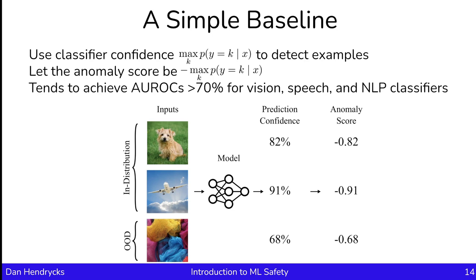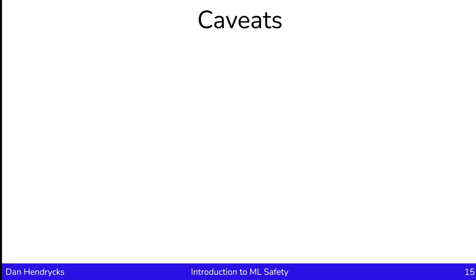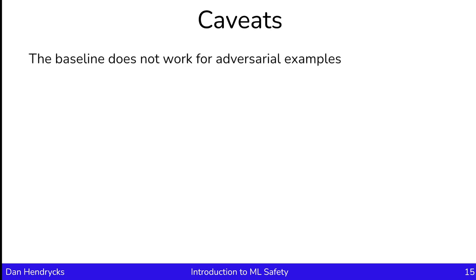As we can see in this example, we look at the prediction confidence, multiply by negative one, and that gives us the anomaly scores. Anomalous examples have higher anomaly scores than in-distribution examples. There are some caveats when using this baseline detector. The first is that the negative maximum softmax probability may not be useful for detecting adversarial examples, since adversarial examples are often designed to instill a false sense of confidence in models.